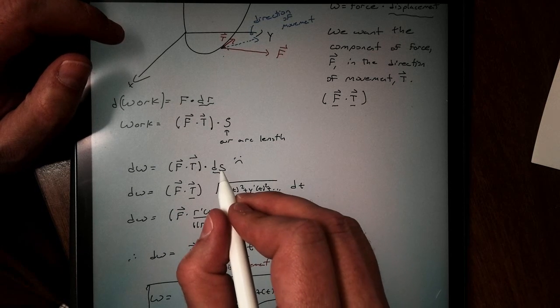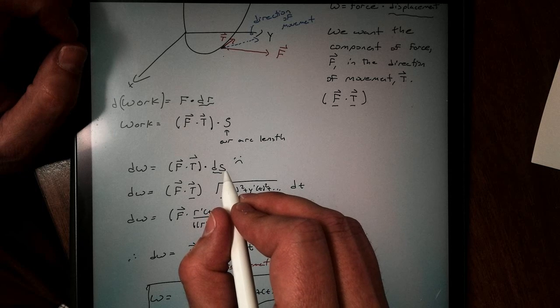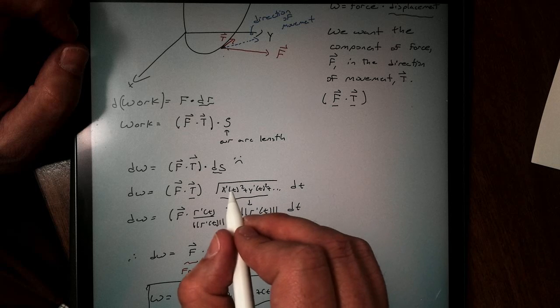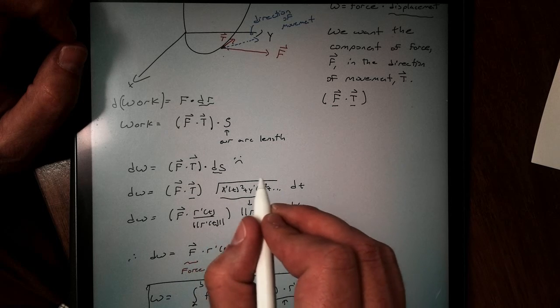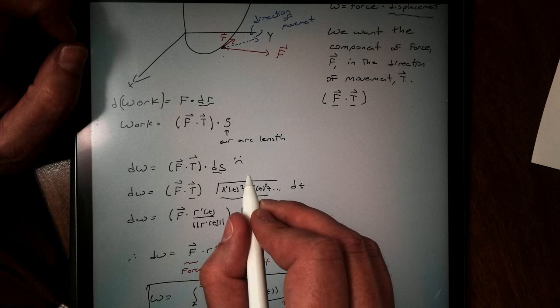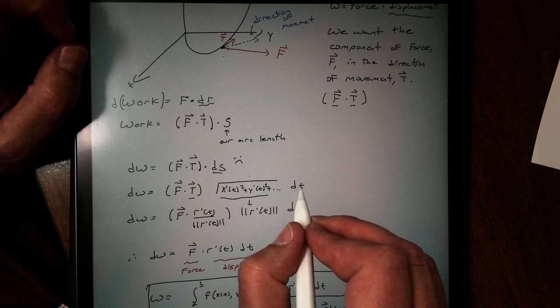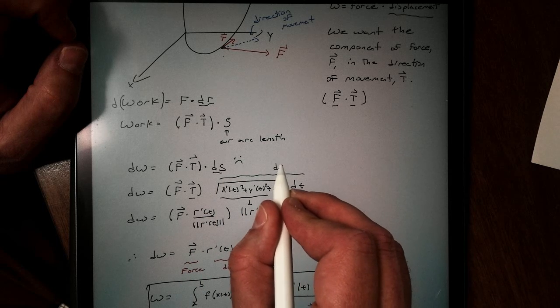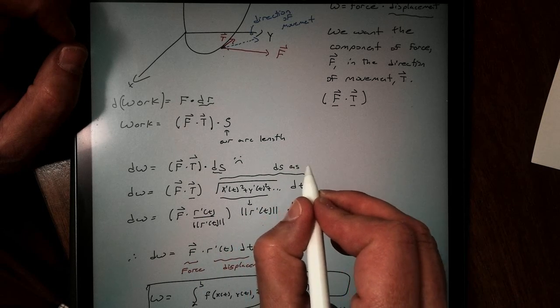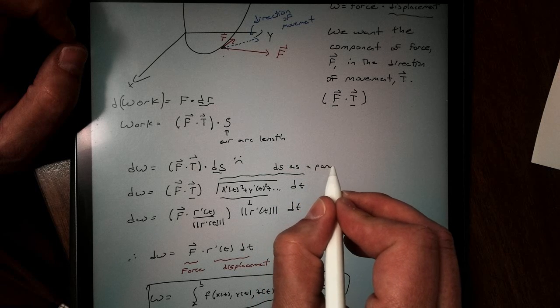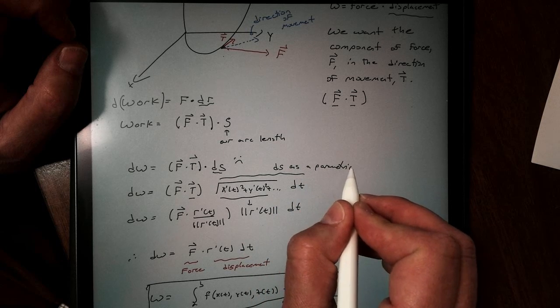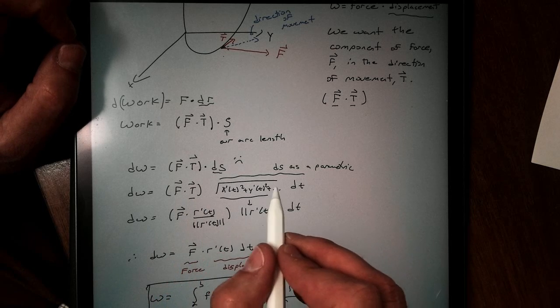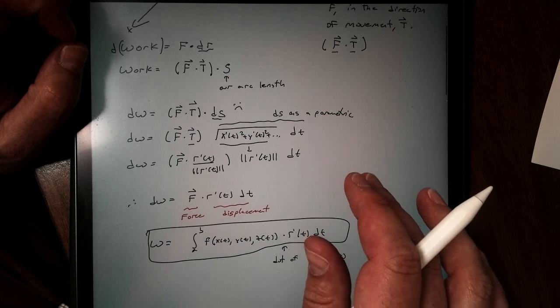So we can convert arc length into a parametric. And to do that, you might recall in a previous video that we did, we're gonna take the magnitude of our arc length, which is our speed, multiply it by our change in time. And this right here, that's our ds as a parametric equation. And now we just have this F dot t times our parametric ds.